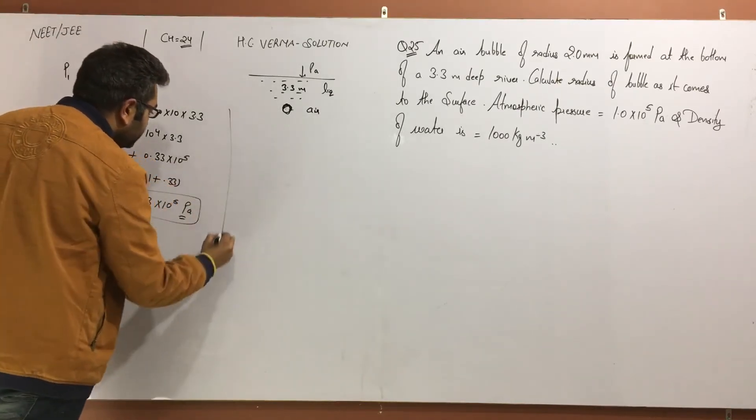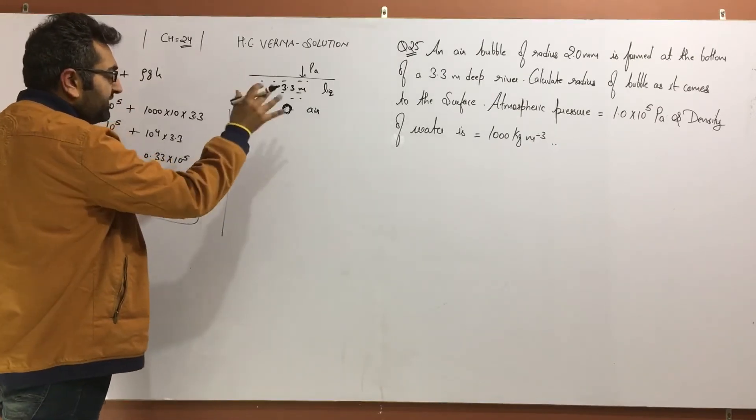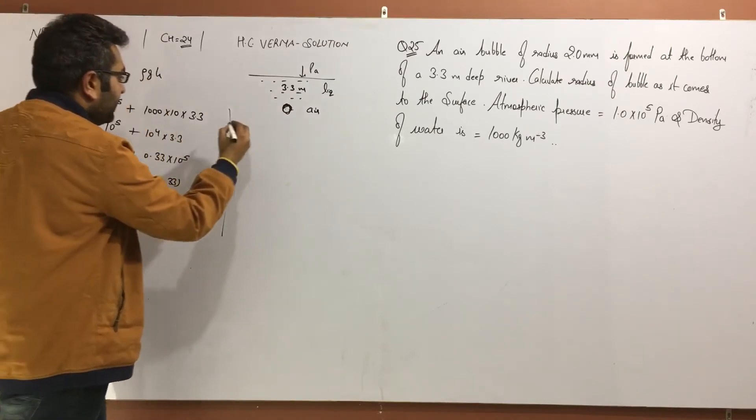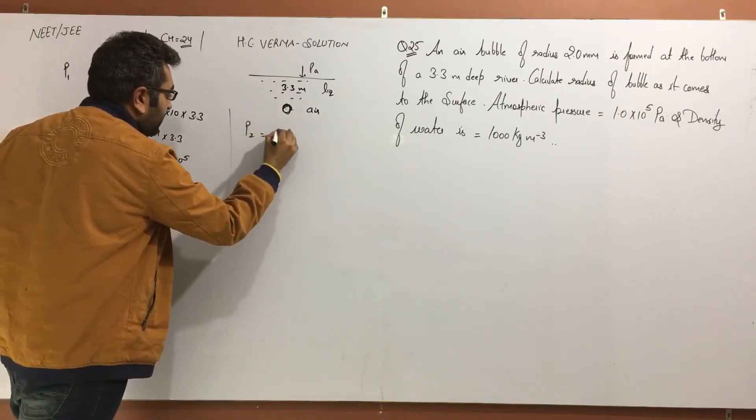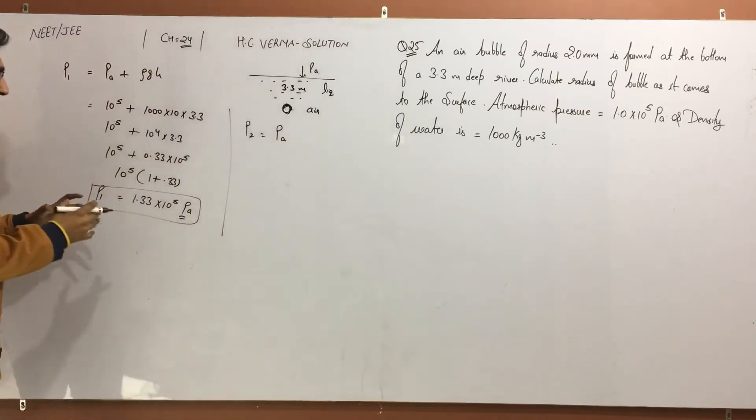In the second situation, the bubble comes to the surface, meaning the liquid column height h becomes zero. So what remains? In the second situation, pressure is just atmospheric pressure. Simple thing.